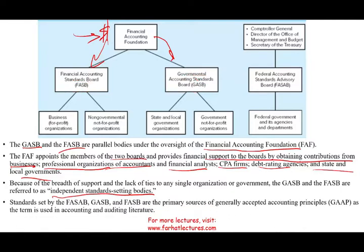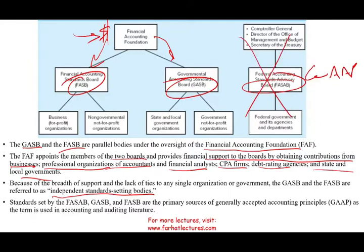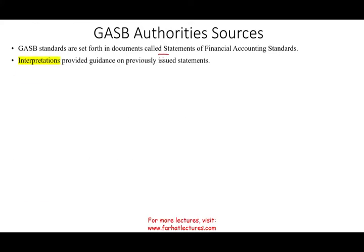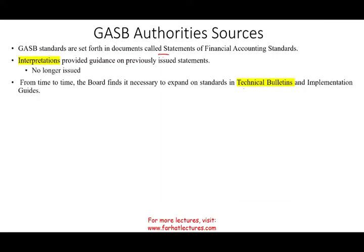Bear in mind that FASB, GASB, and FASAB are all part of GAAP — generally accepted accounting principles. Now, regarding GASB's authoritative sources: GASB standards are set in documents called Statements of Financial Accounting Standards. They used to issue interpretations for guidance, but they no longer do. Instead, they now issue technical bulletins and implementation guides. The sources of authoritative GAAP for state and local government fall under two categories.